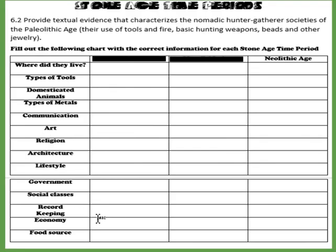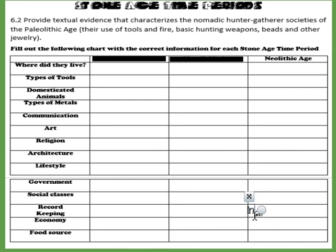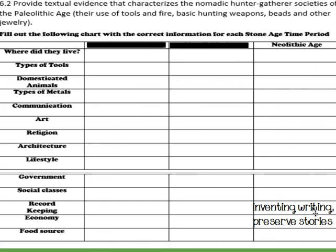For record keeping: Paleolithic people had no time — they were trying to survive. Mesolithic cave drawings could be considered a type of record keeping, but no written records or words. The Neolithic people did have record keeping because as their vocabulary developed they invented writing, and with those writings they could preserve stories. It wasn't letters like we think of — it was symbols to represent things, so instead of writing C-A-T you'd have a symbol to represent cat.